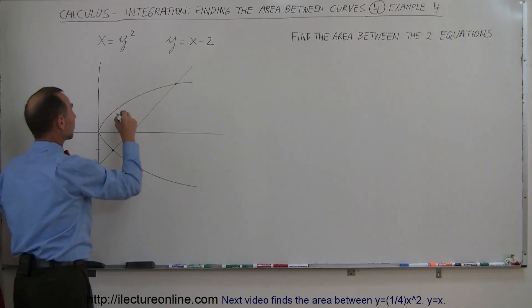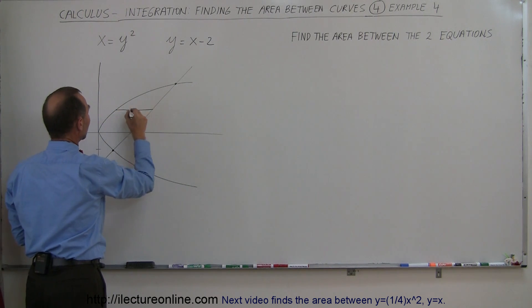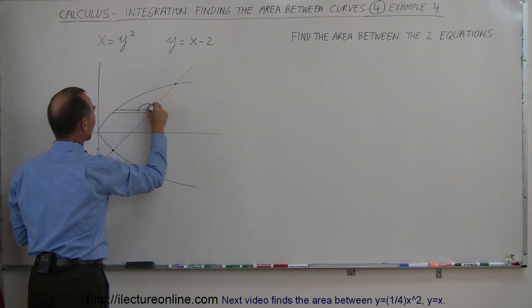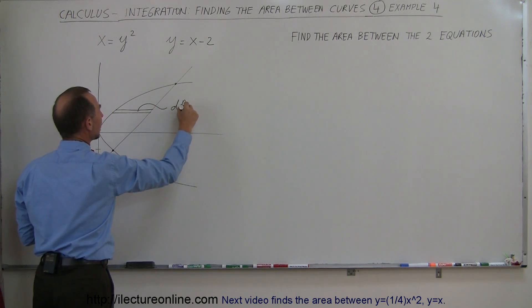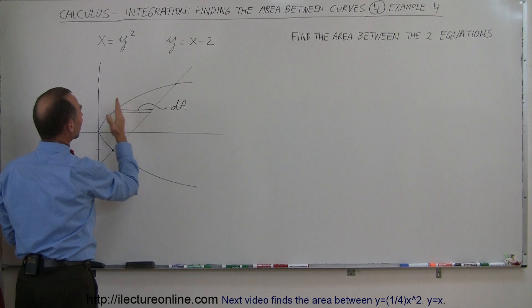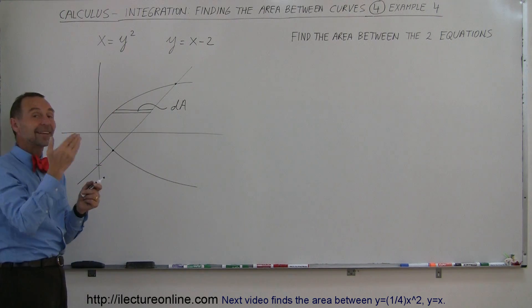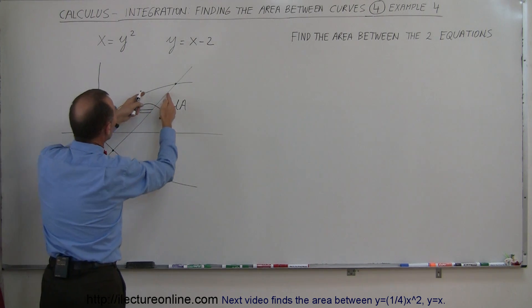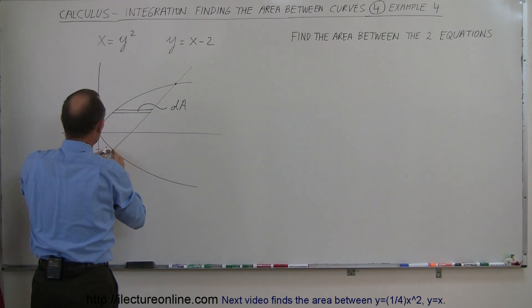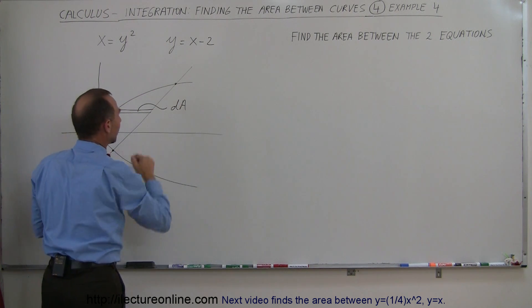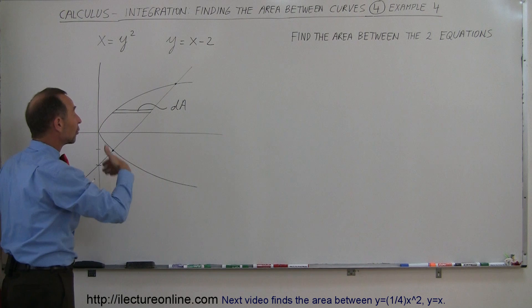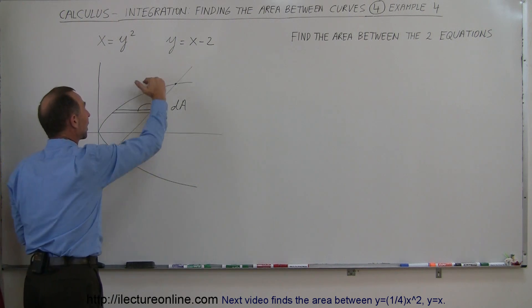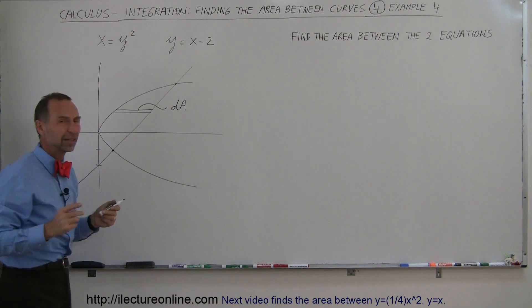It's better to set up your area element sideways like this, because if you set up your area element sideways like this, so there's your little dA, that means that the top and the bottom of the area, or in this case, the left and the right side of that little area element, will be bounded by the same line all the way through from here to there. And so what we can then do is integrate, or sum them all up, going from this point to that point in the y direction. So let's do that.